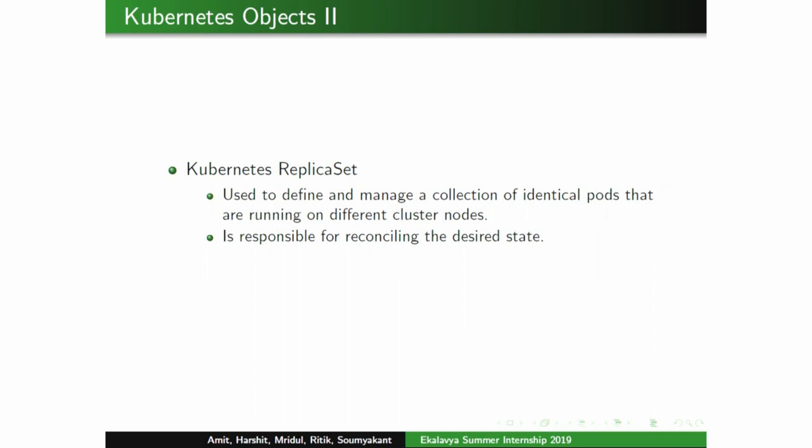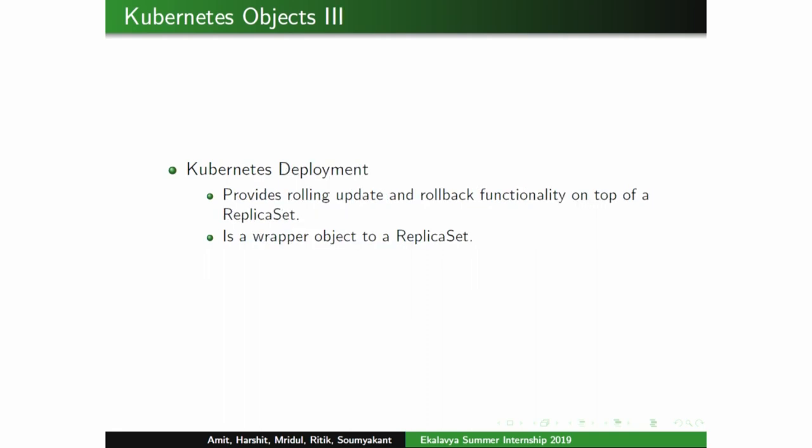A Kubernetes ReplicaSet ensures multiple instances of all services are running. We write a manifest file to declaratively declare the desired state of our cluster, and the ReplicaSet reconciles that state. Since Kubernetes follows the principle of single responsibility, each object does only one task. For rolling updates, there is a wrapper object around the ReplicaSet called a Kubernetes Deployment.